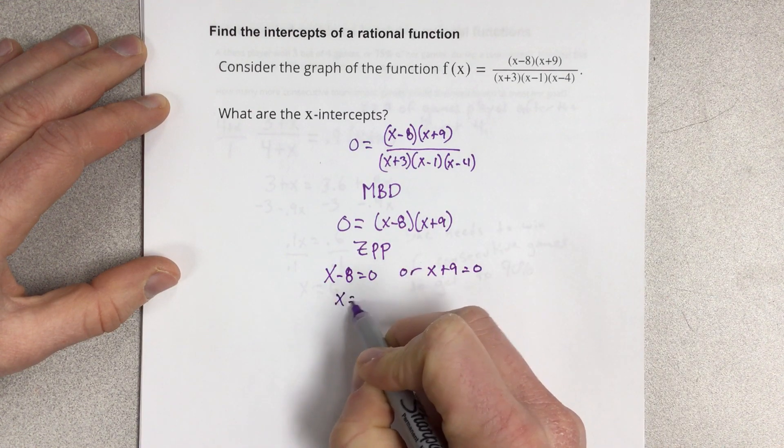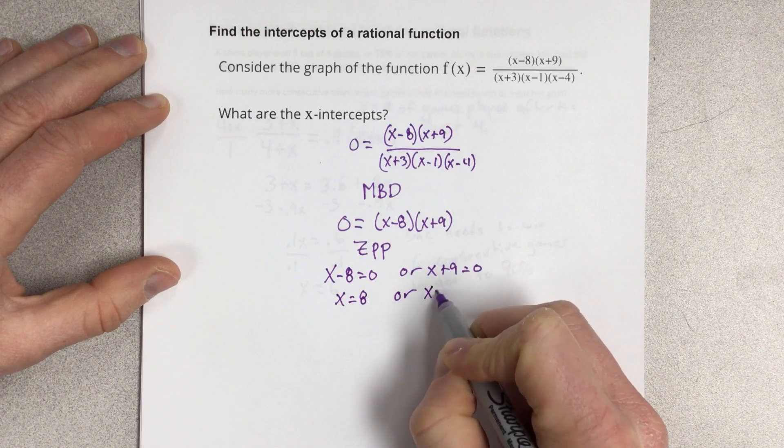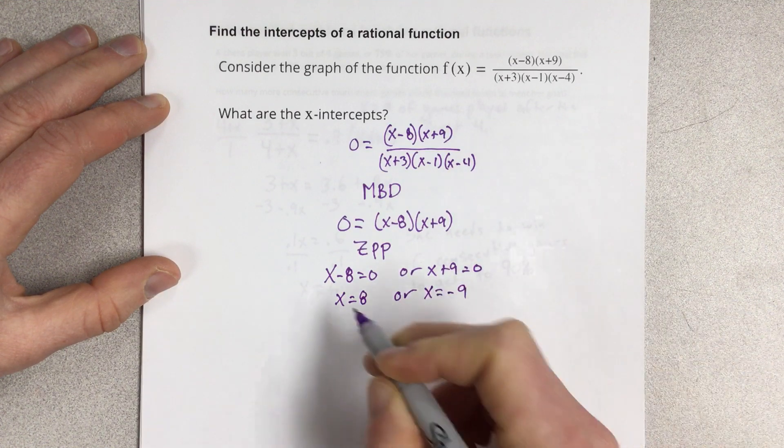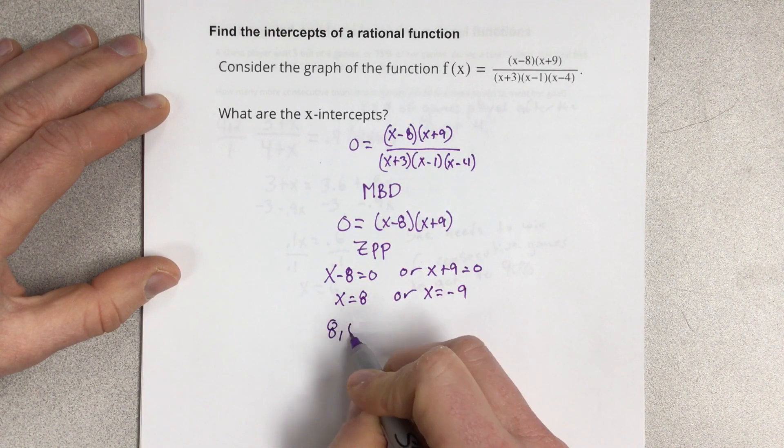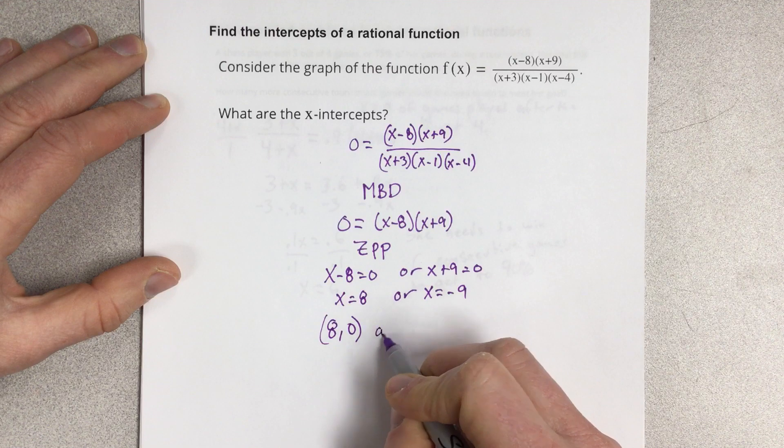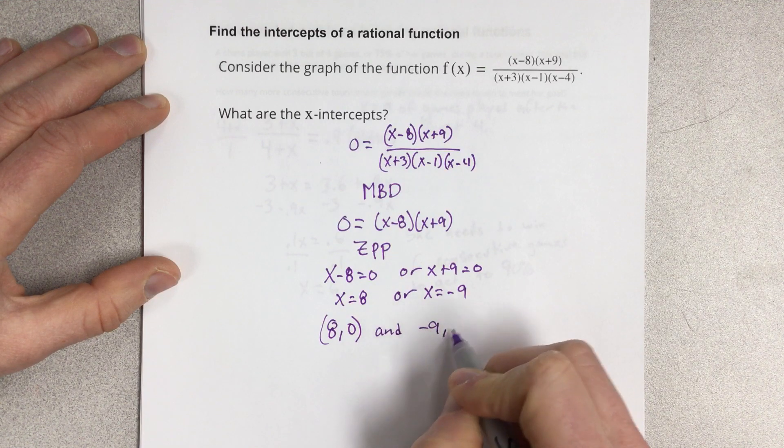Add the 8, you get x equal to 8. Or subtract the 9, you get x equal to negative 9. So our x-intercepts here would be (8, 0) and (-9, 0).